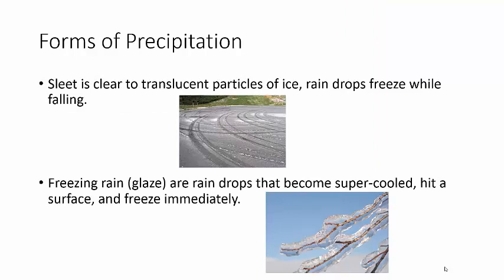Sleet is dangerous. Sleet is clear droplets or particles of ice. What happens is it comes down as rain, and then as it gets down towards the ground where it's really cold, it will freeze. It doesn't really have time to become snow through the Bergeron process — it just freezes, and so you get sleet. That's different than glaze. Glaze is precipitation that comes down as rain, but once it hits the surface, the surface is so cold that it freezes on contact — that's freezing rain. So sleet freezes as it's falling; freezing rain freezes on contact.